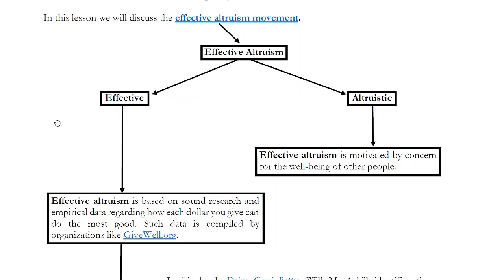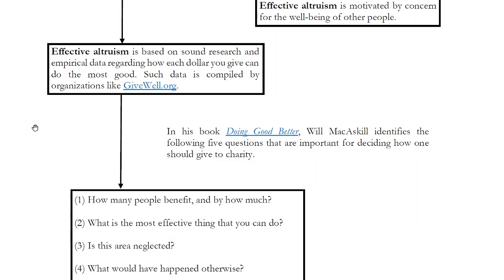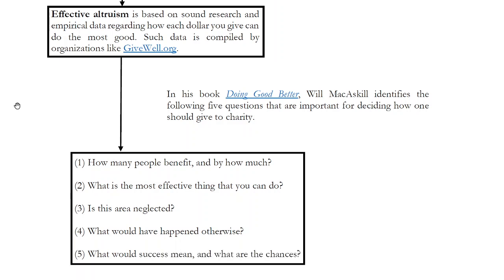Perhaps the more controversial, more innovative part of the effective altruism movement is the effective aspect. Because utilitarians are very much focused on what are the consequences of our actions. And we can only know what the consequences of our actions are if we have hard data, if we have good scientific evidence. And so the effective aspect says that the way you should give is in an empirically researched and data-driven way that shows you how each dollar you could spend can do the most good.